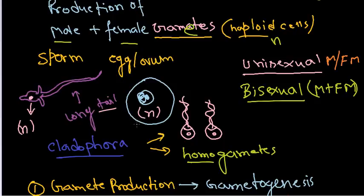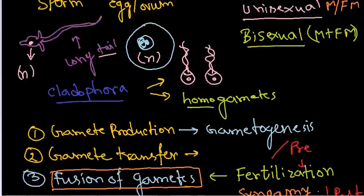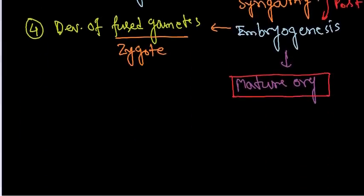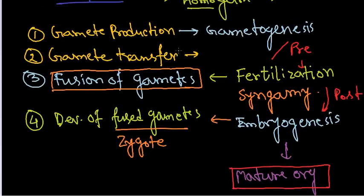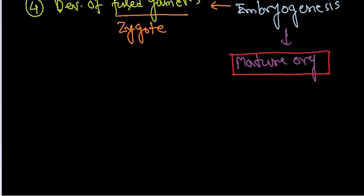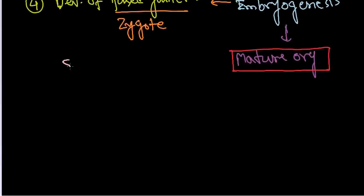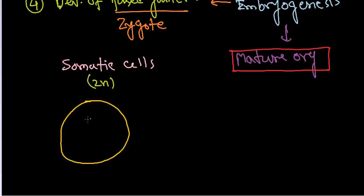This is very interesting. Once you know about gamete production, now how are they actually produced? Inside our body we have somatic cells, and somatic cells have 2n number of chromosomes. If I draw a somatic cell, it is having 2n number of chromosomes inside.